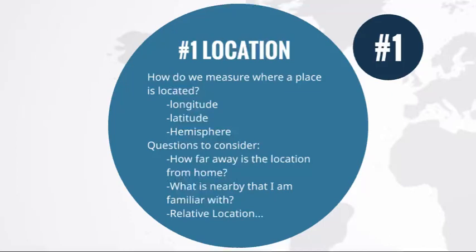You're going to be exploring the absolute location of a place. So if someone asks you where your school is, you might say at the corner of 10th Street and 2nd Avenue. A geographer might give you the answer 38 degrees south latitude and 145 degrees east longitude — that's the absolute location of a city. We'll also be considering how these imaginary lines drawn on the surface help geographers locate any place on Earth.